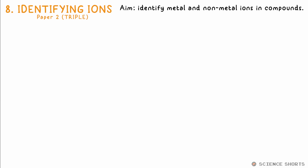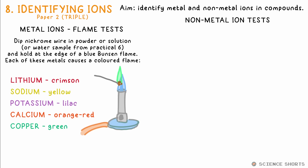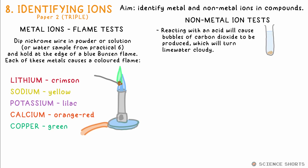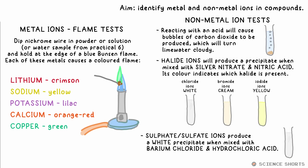Chem 8: identifying ions. We need to identify various metal and non-metal ions found in compounds. These five metals can be identified using a flame test — we dip a piece of nichrome wire in a solution or powder of the compound and place it at the edge of a Bunsen flame. To test for carbonate ions, add hydrochloric acid; if bubbles are made, collect the gas and put it in lime water — if it turns cloudy, it's carbon dioxide, confirming carbonate ions. To test for halide ions, add silver nitrate solution and nitric acid: a white precipitate means chloride ions, cream means bromide, and yellow means iodide. Adding hydrochloric acid and barium chloride gives a white precipitate if sulfate ions are present. If you've done a good job purifying your water from Practical 6, you shouldn't see positive tests for sodium or chloride ions.